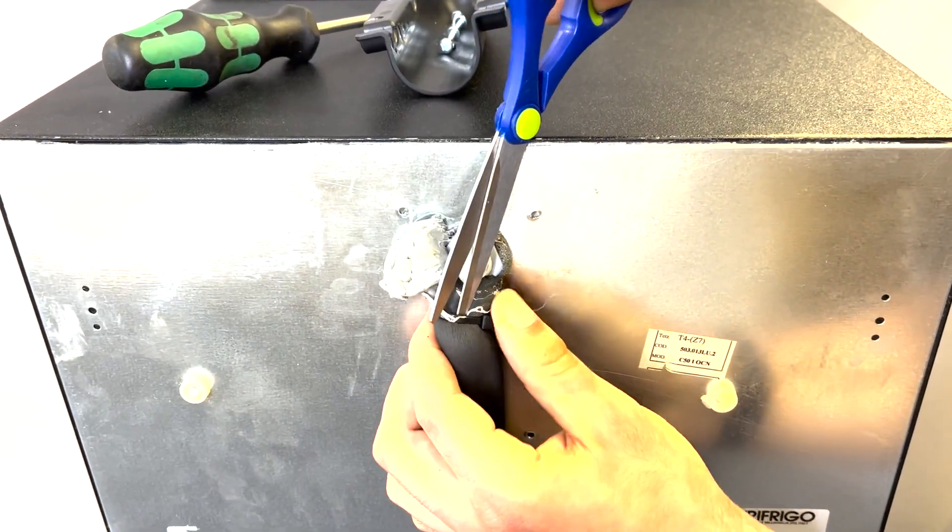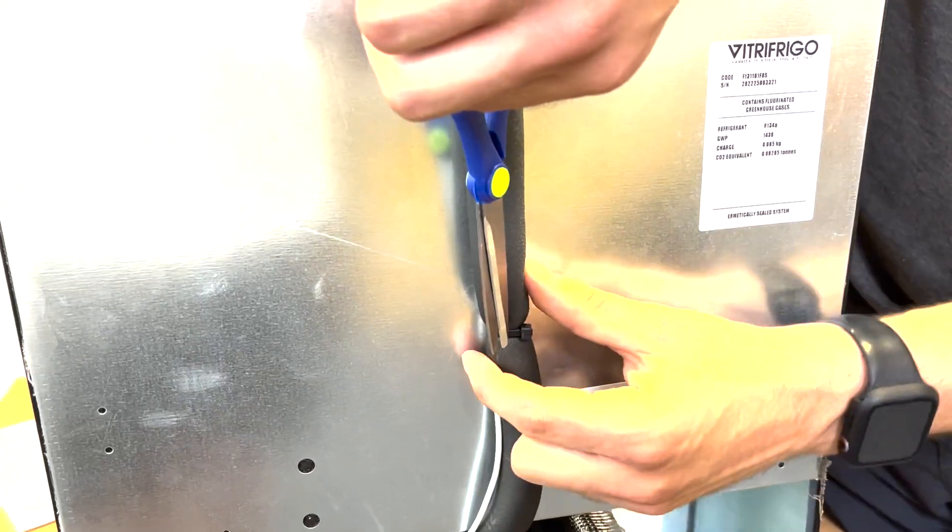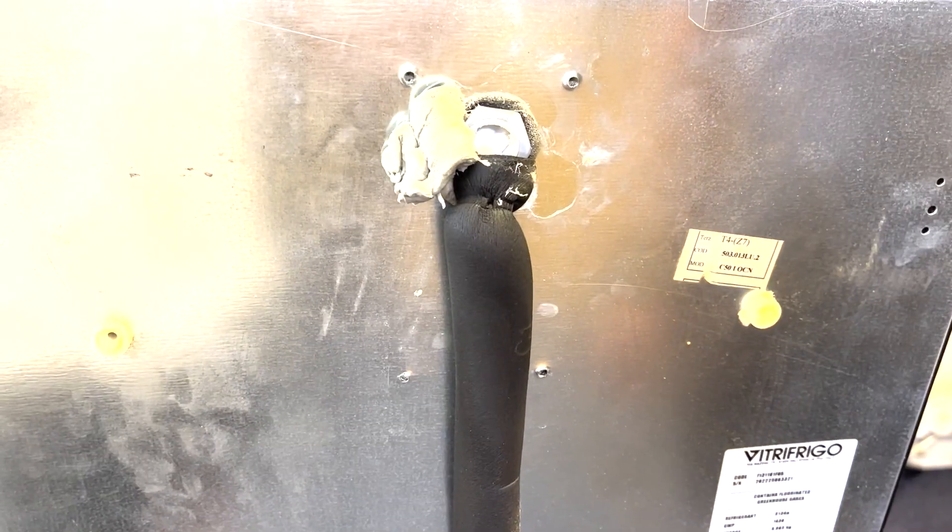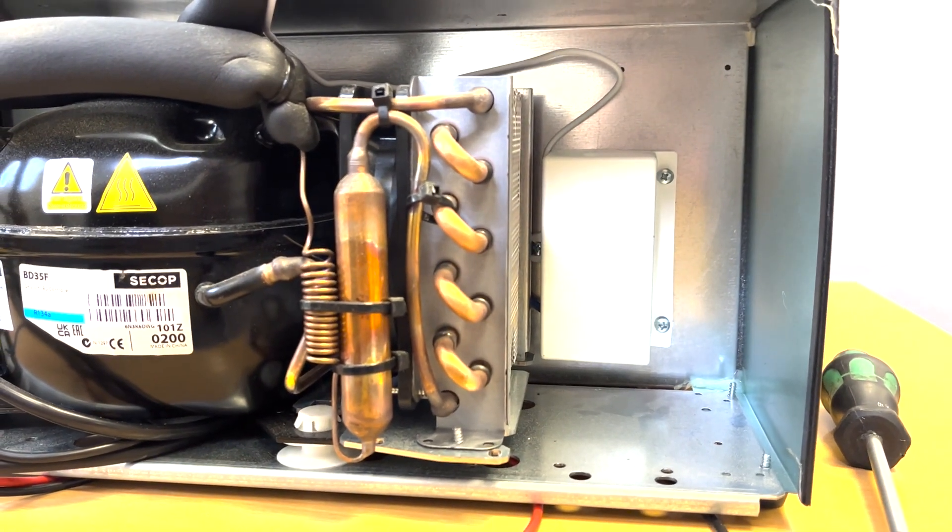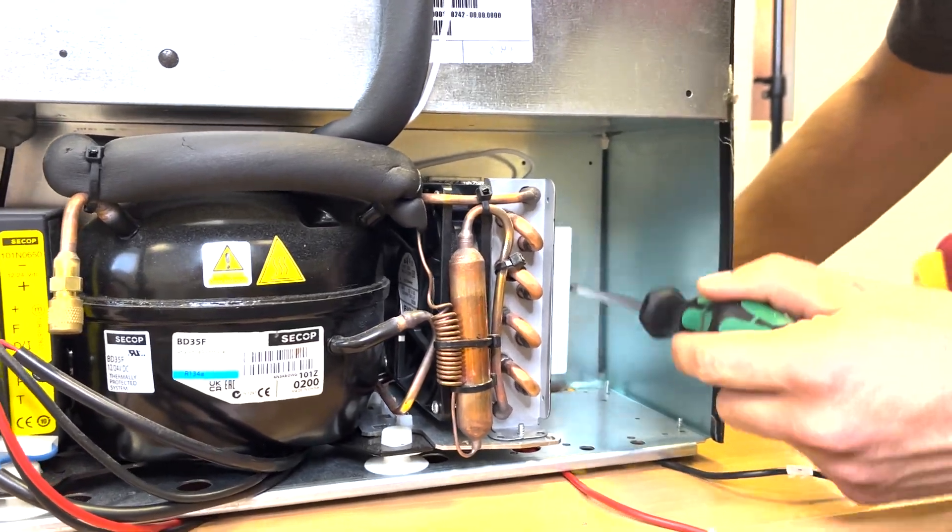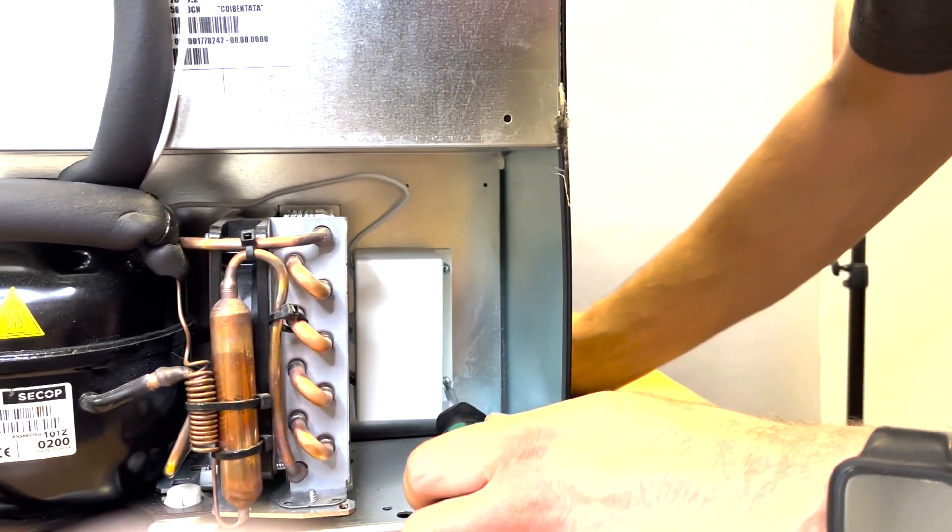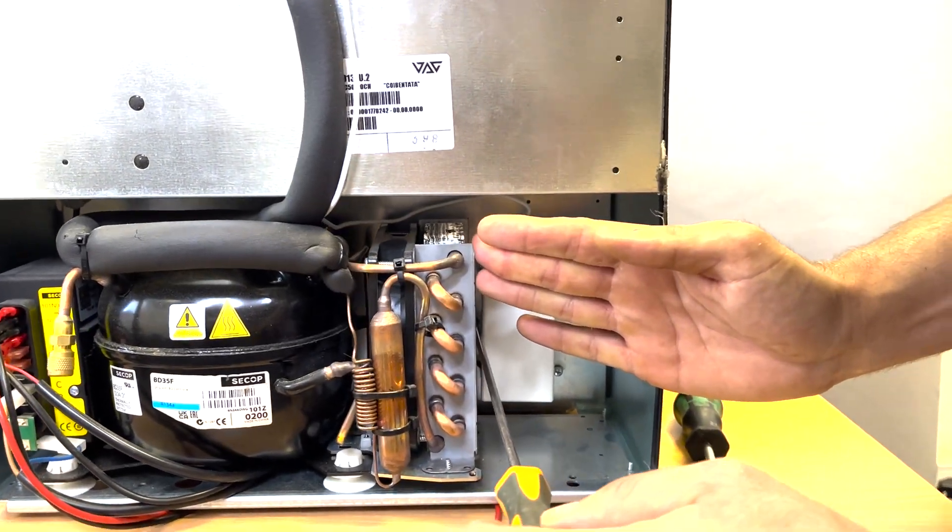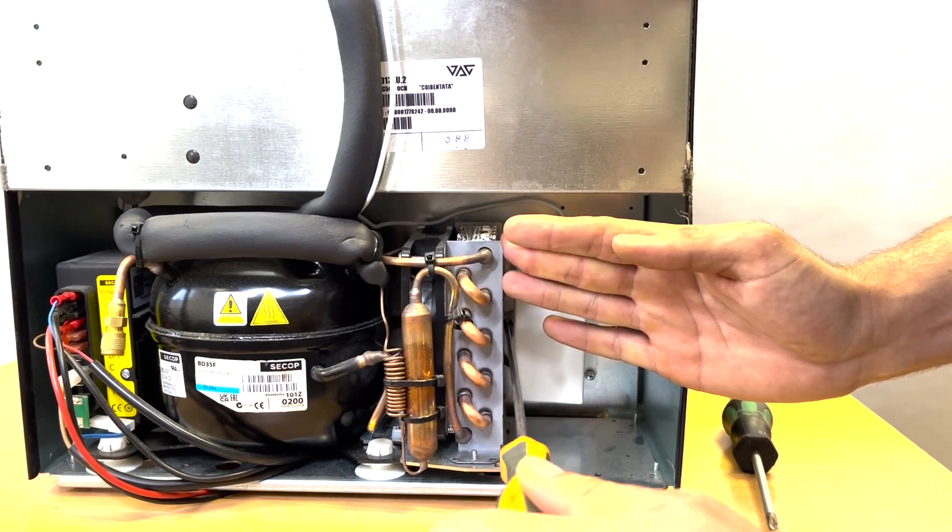Cut both cable ties that are securing the thermostat probe to the pipe lagging. Using a Phillips screwdriver, remove the three screws for the thermostat housing. You may need to apply a small amount of pressure on the condenser to remove one of the screws.